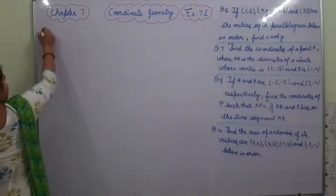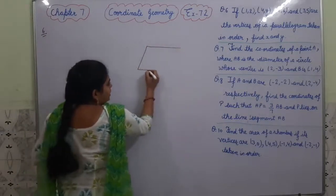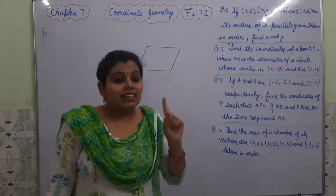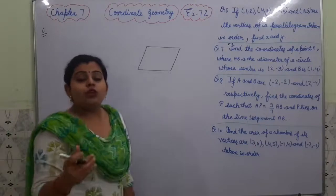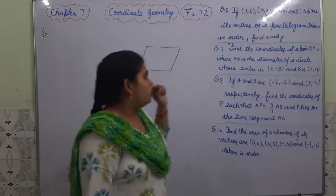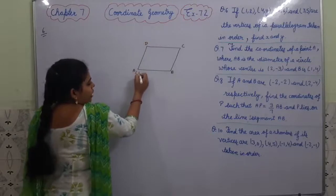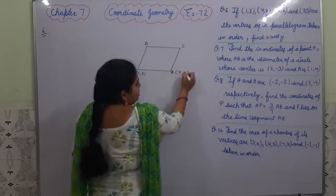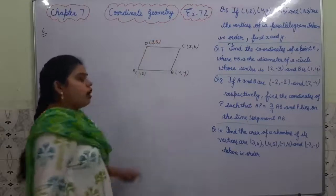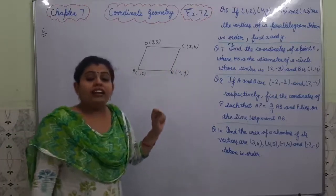In question number 6, a parallelogram is given. We know that in a parallelogram, opposite sides are equal and diagonals bisect each other. So in this question we will use the property of the parallelogram. Four vertices are given in order — ABCD is a parallelogram where A is (1,2), B is (4,5), C is (x,6), and D is (3,5). We have to find the value of x and y.